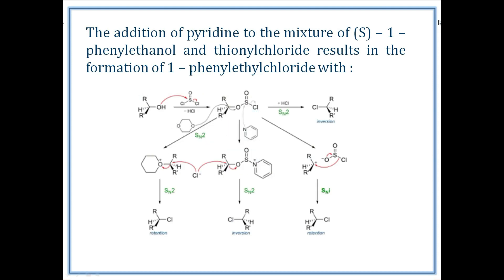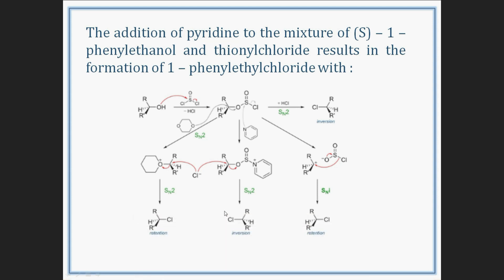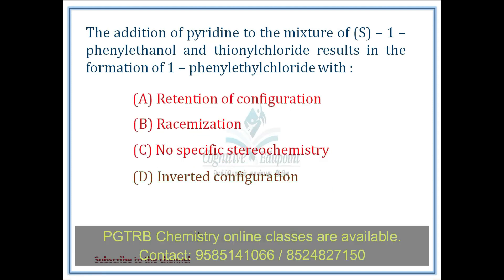When we have an SNi reaction, thionyl chloride will have inversion via the SNi mechanism. When we add pyridine, pyridine in the complex form results in the inversion of configuration. That's why we need to add dioxane — so the correct answer is inverted configuration.